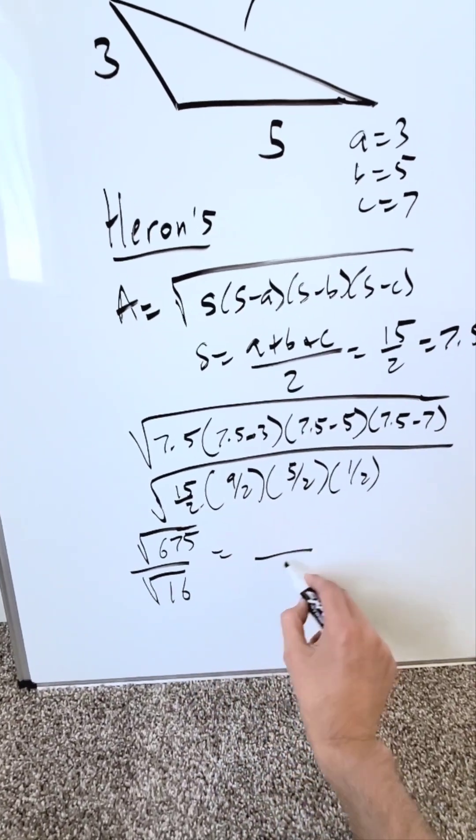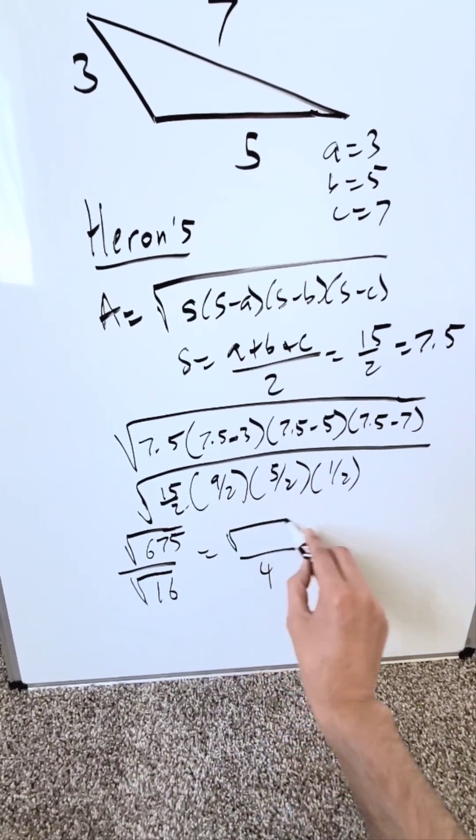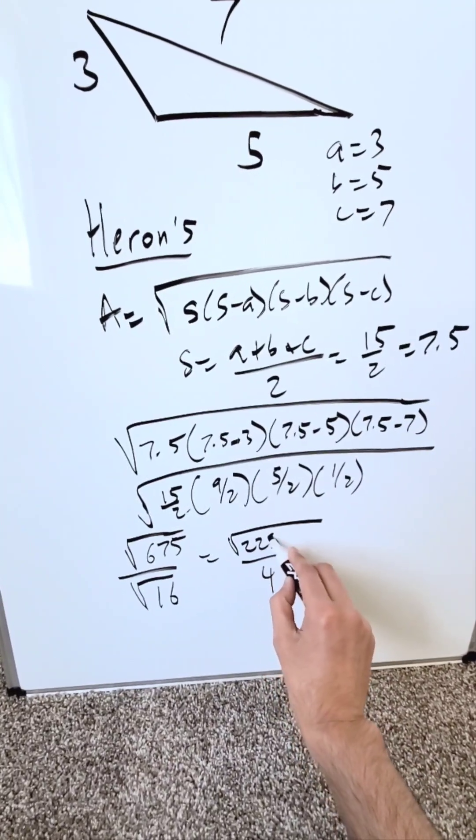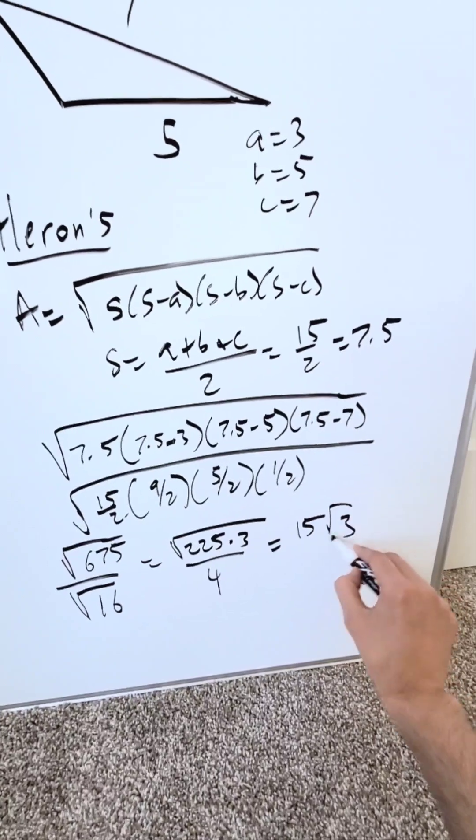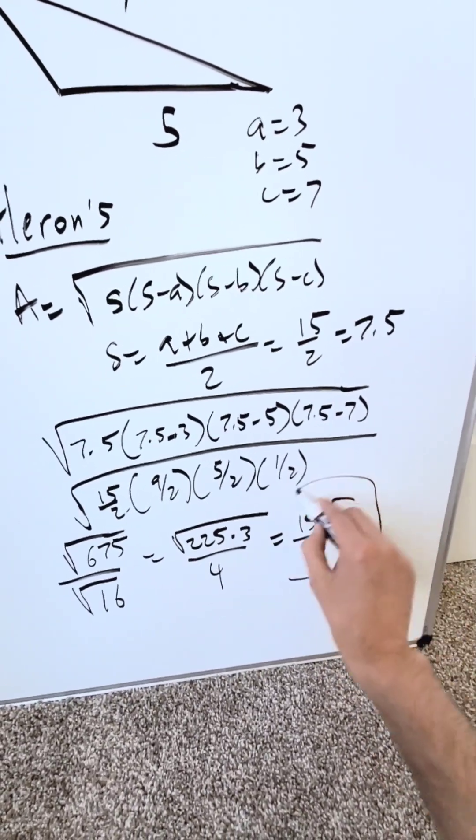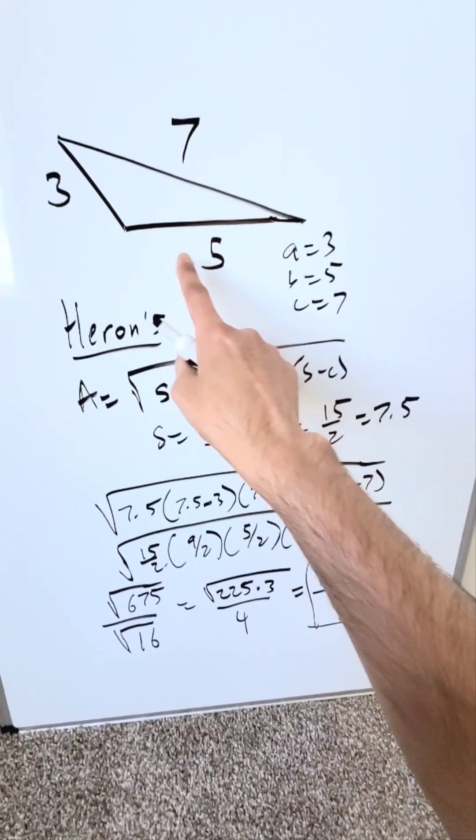Now you know in the denominator we're getting a 4 which is the square root of 16. Here I have 225 times 3 but 225 has a perfect root comes out which is 15. 15 root 3 over 4 is the area of this triangle you are provided.